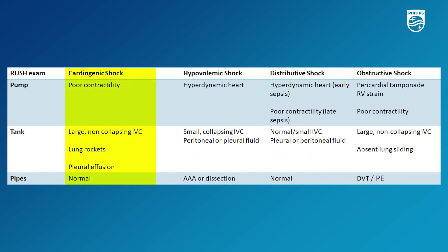Cardiogenic shock refers primarily to a pump issue — the heart is not working very well. Often what you'll find is poor contractility of the heart, a large non-collapsing IVC as evidence of right heart failure, and with the left heart not pumping well enough, you might notice lung rockets and a pleural effusion on the lung windows. When examining the large vessels we would expect those to be normal.